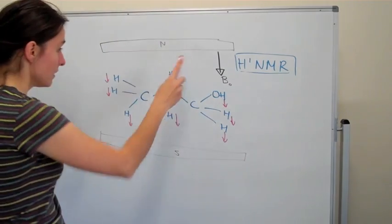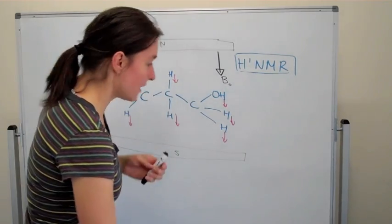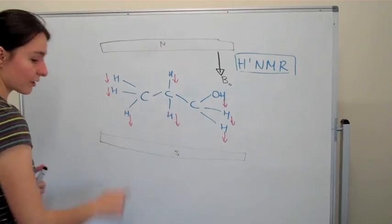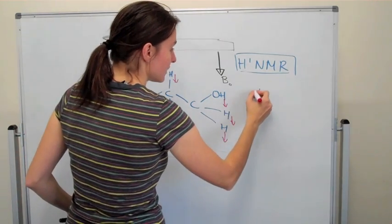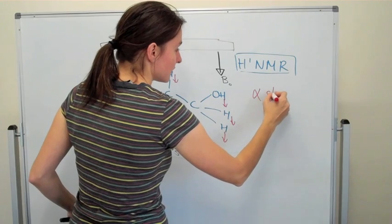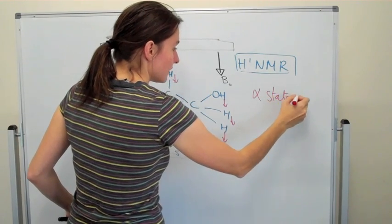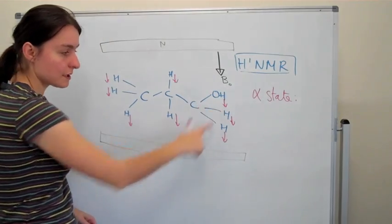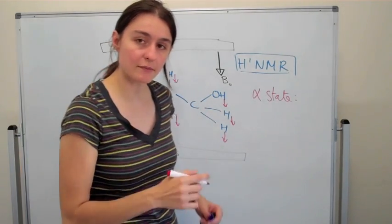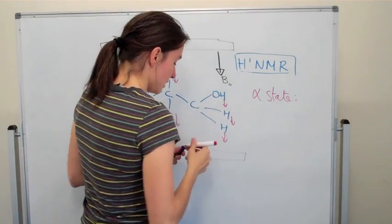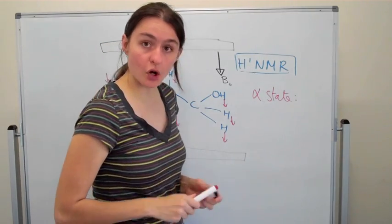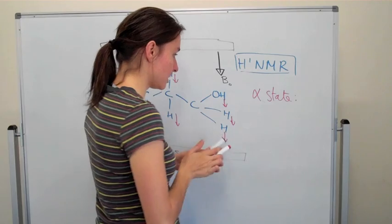So what happens here is all these are currently in the alpha energetical level, it's known as the alpha state. The alpha state is basically when the mini magnetic fields point in the same direction as the external magnetic field, so this is a low energy, the lowest energy.